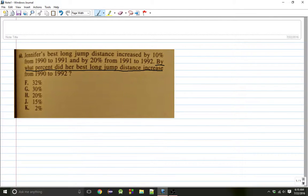So by what percent did her best long jump distance increase from 1990 to 1992? In order to solve this problem, you've got to remember that we start with 1990. So the BLJ for 1990, and we're going to denote that as X.